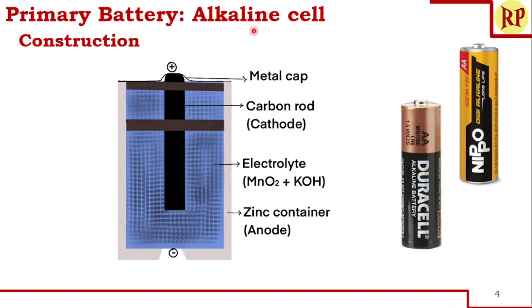Let us understand the construction of an alkaline cell. Here we can see that the label should say 'AA' or 'alkaline battery', because it looks almost similar to a dry cell — the only visible difference is the plastic wrapper. Once we remove this wrapper, we will see a grey container, which is nothing but a zinc container, acting as the anode.